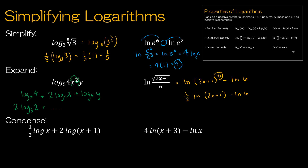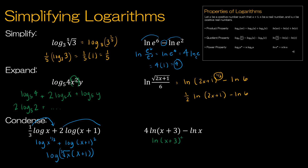Now let's condense — write as a single logarithm. First, use the power property to eliminate the values out front. So we get log of x to the one-third, plus log of (x+1) squared. Because it's a plus, this becomes a product: the log of the cube root of x multiplied by (x+1). For the last question, use the power property to get natural log of (x+3) to the fourth power minus natural log of x. Because it's subtraction, this becomes a quotient: natural log of (x+3) to the fourth power divided by x.